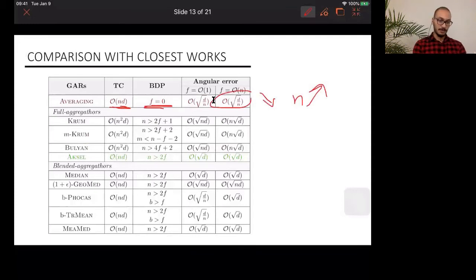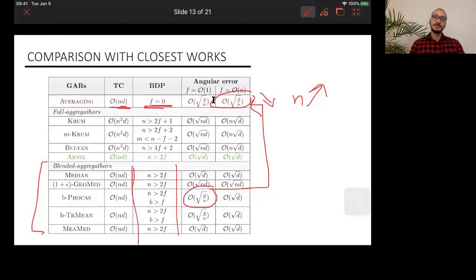Now we have seen the downside of blended guards. Although they have an optimal time complexity, an optimal breakdown point, and even some of them have reached the angular error of averaging, which is the desired property. Now to the date of publishing this paper, we only knew about three full guards: Crom, Multichrome, and Boolean. The problem was the fact that they had a high time complexity, which was quadratic in the number of workers, and they had a high angular error. You see this term in square N appearing, even N square D. So this is bad.